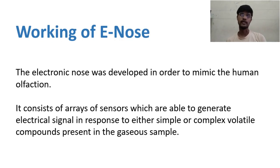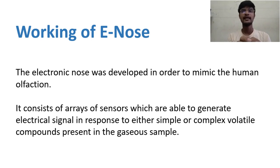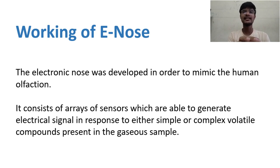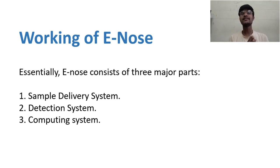Now let's jump to the core concept: the working of the e-nose, what it consists of, and what work each block does. The electronic nose was developed to mimic human olfaction. It consists of different arrays of sensors able to generate electric signals in response to simple or complex volatile compounds present in a gaseous sample. Broadly, the electronic nose consists of three major parts: one, the sample delivery system; two, the detection system; and three, the computing system.